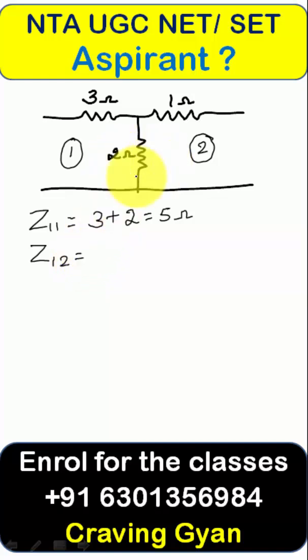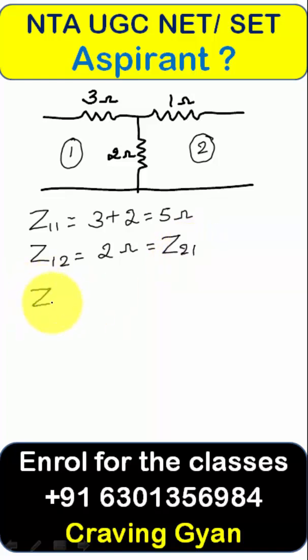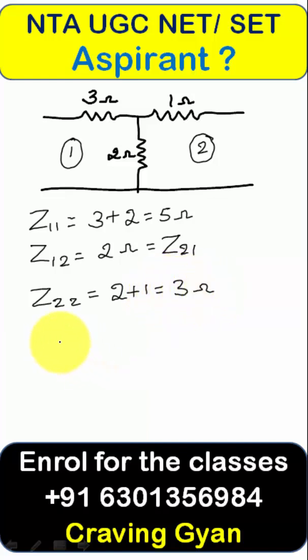What impedance is Z12 going to offer? It is two ohms. Similarly, Z21 is also equals to two ohms. Then Z22 equals two plus one ohm, which is equals to three ohms.